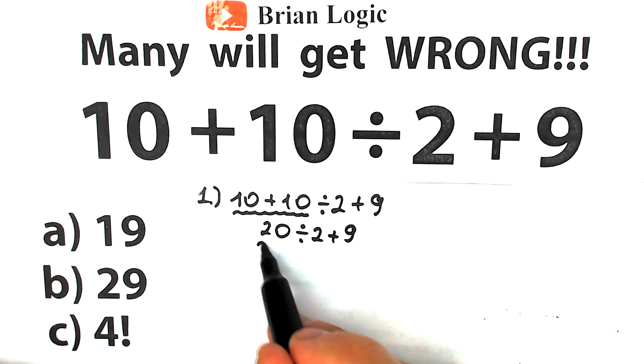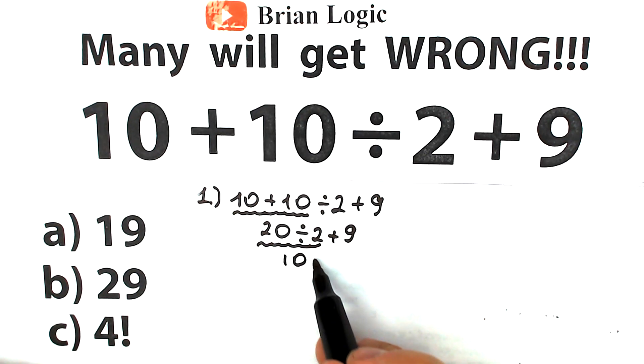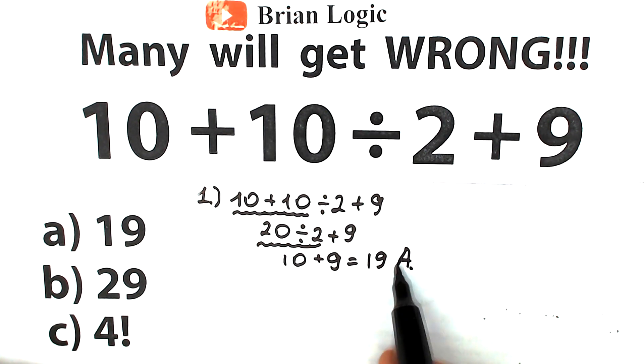One small step from left to right: 20 ÷ 2 gives us 10, and 10 + 9 = 19. This is option A. So a lot of students solve this question like that and say that option A is the correct answer.